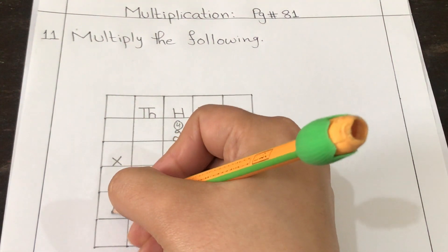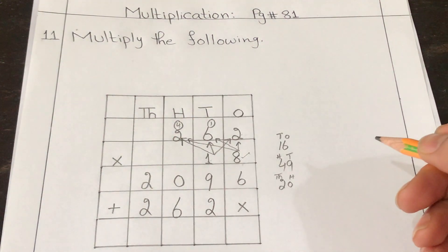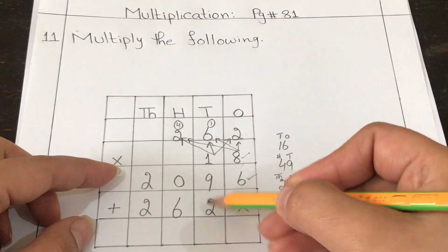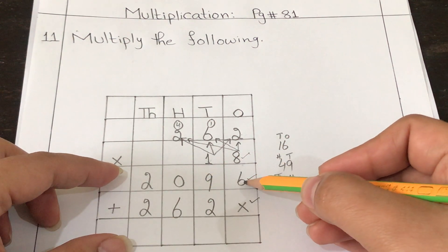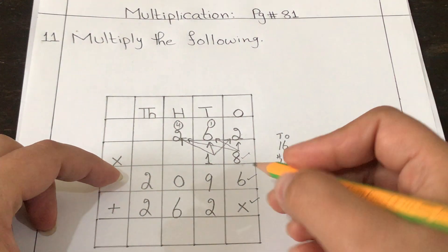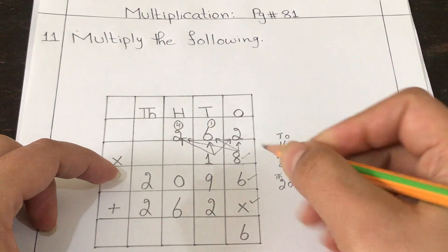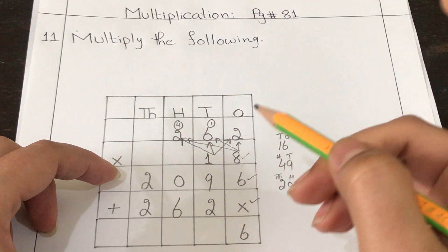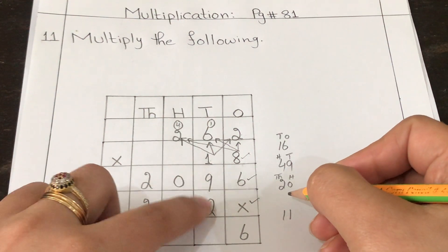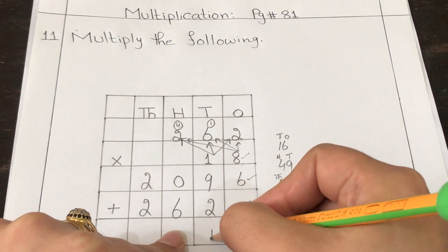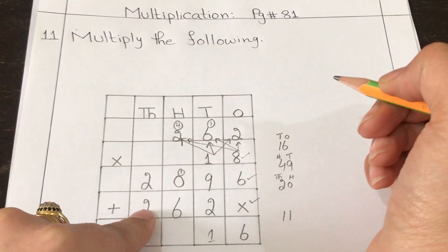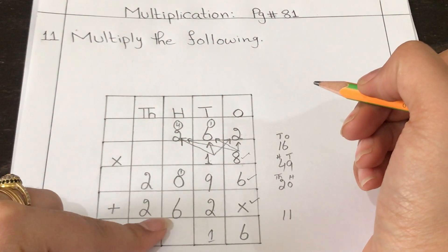Now write an addition sign and add the two rows column-wise. Six plus crossed — nothing to add, so it's six. Nine plus two is eleven, a two-digit number, so write one here and carry one to the hundreds column. One plus zero is one, and one plus six is seven.